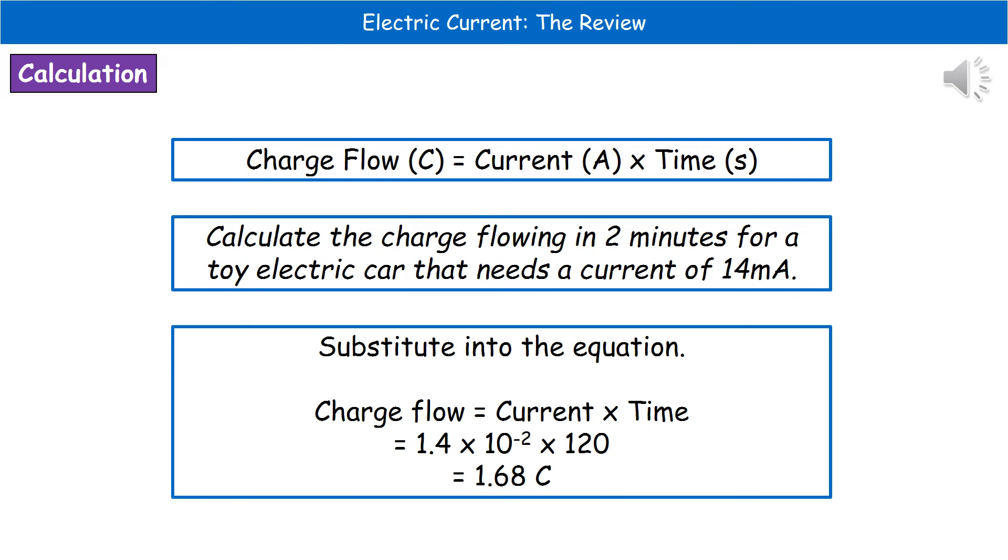The next thing to do is substitute into our actual formula. So we know that charge flow is current times time. We know that our current is 1.4 times 10 to the minus 2 if we're using standard form or 0.014 if we're not, and then we're going to times that by our time in seconds, which was 120. So you put that into your calculator and you should get your answer of 1.68, and don't forget the units if they're not already provided in the question. In this case, coulombs with a capital C.